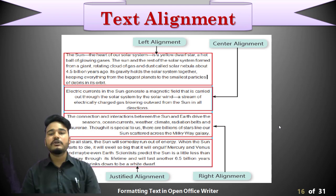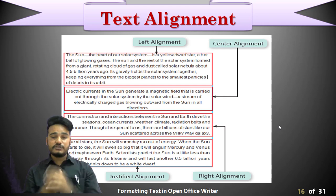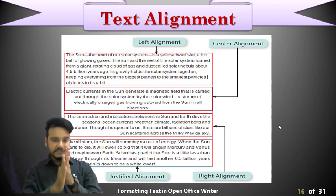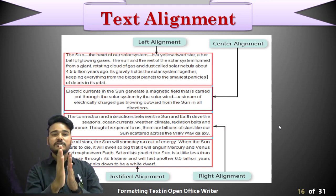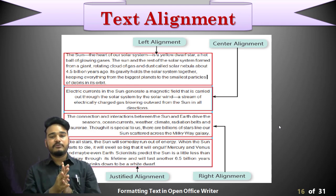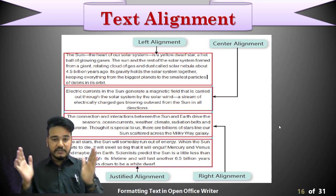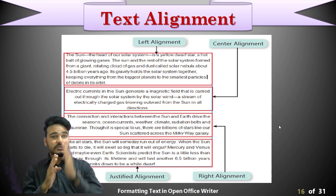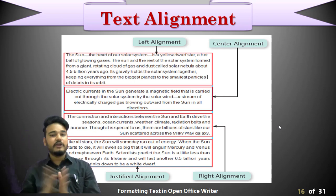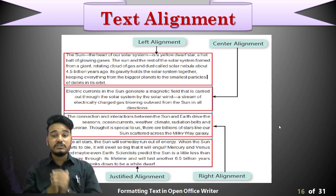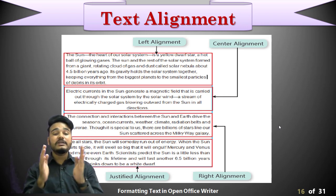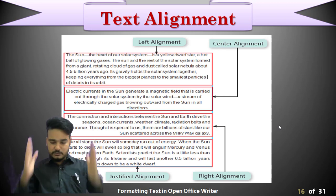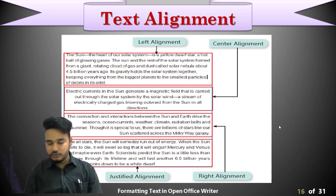Looking at examples on screen: in left alignment, all text starts from the left side but does not end at the same point on the right. In center alignment, the text is placed in the center of the page. In right alignment, all lines end at the same point on the right. In justify alignment, the application automatically adds spacing so all lines start and end at the same margins — making it look neat.